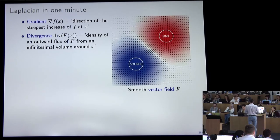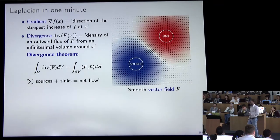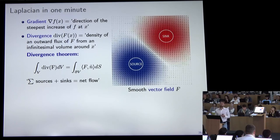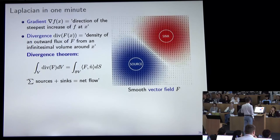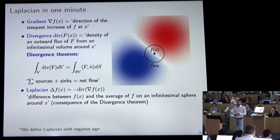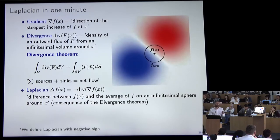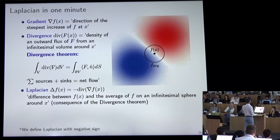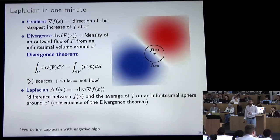The divergence theorem tells you a kind of conservation: if you sum up all sources and sinks, you get the net flow through some volume. The Laplacian operator is defined as the divergence of the gradient, and geometrically you can think of it as the difference between the value of a function at a point and the average of the function's value in an infinitesimal neighborhood — on a tiny sphere with radius going to zero.